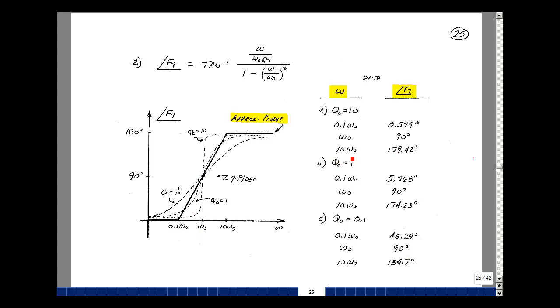Plug in omega equals 10 omega naught, this expression equals 179.42. In this case, it's 174.23 and then 134.7. We're tending towards 180 degrees. Why is that happening? When omega equals 10 omega naught, I have a very large negative number. I have a positive number for the imaginary part. So I'm in the second quadrant, very close to the negative real axis, and so that's 180 degrees.